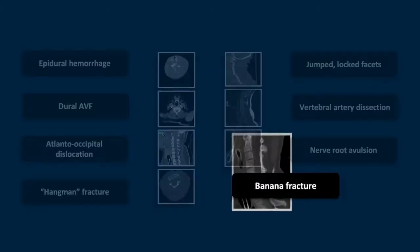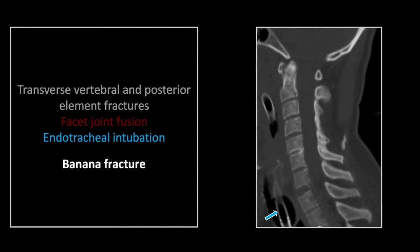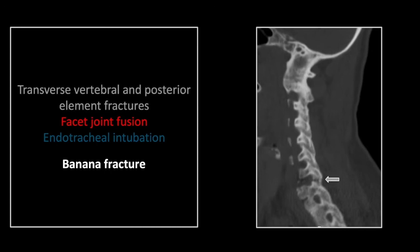Our last case is a complication of severe ankylosing spondylitis — the banana fracture. You can see there is widening and asymmetry of this intervertebral disc space. Note the presence of the endotracheal tube, which is almost always present in banana fractures. I have seen a large number of these resulting from intubation, and it's safe to assume that when you see one of these fractures in the presence of a tube, they perhaps occurred simultaneously. Attention is drawn to this fracture by its involvement of the posterior elements.